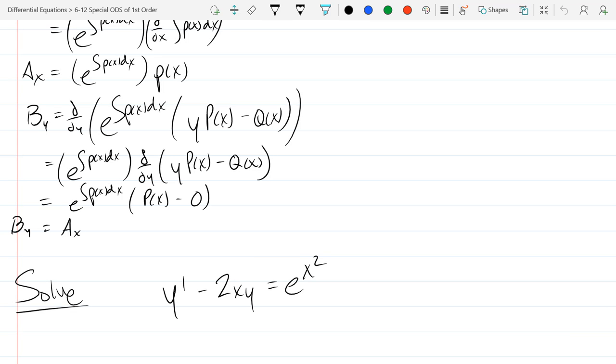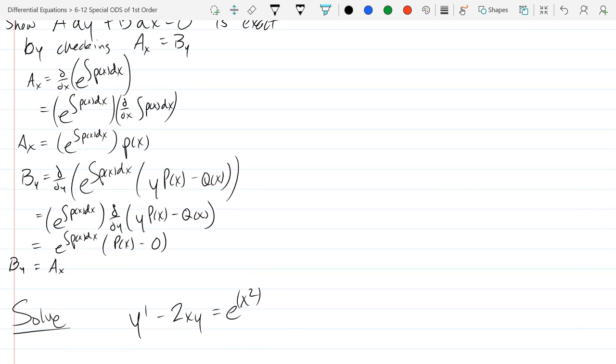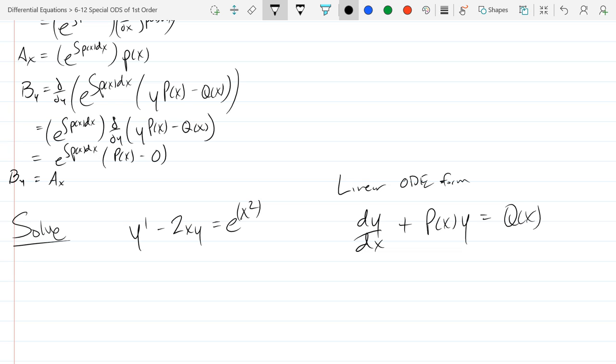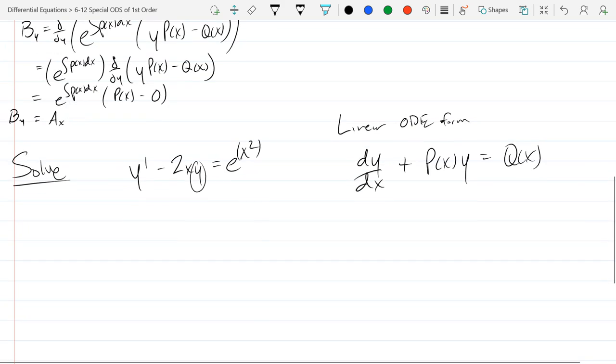So we got y prime minus 2xy equals e to the x squared. And it is parenthesized like this. It's not e to the x and then square that, it's e to the power x squared. So you need to be careful with your parentheses in the power. Alright, so first of all, this better be a linear ODE, so let's check that form really quickly. So I'm going to copy down the linear ODE form right here: dy dx plus px times y equals q of x. So we got our y prime, that's dy dx. We got that part. We got our extra y hanging around right there. And what's left over is our p of x function. And on the right side, we have our q of x function. So we'll just write down what these are.